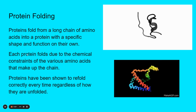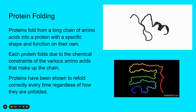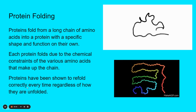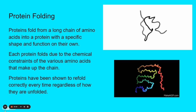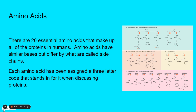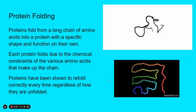Each protein folds due to the chemical constraints of the various amino acids that make up the chain. If we go back and look at all the amino acids again, all of these side chains have different chemical properties. So if certain side chains are there, they can't be next to other side chains because of electrostatic forces, and that changes how the protein can fold.